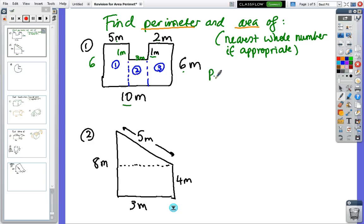So the perimeter is just going to be the distance right around the outside, so it's six, two, one, three, one, five, six, and then ten. So the perimeter is just around the outside, so six, eight, nine, ten, thirteen, eighteen, twenty-four. So the perimeter is thirty-four meters.